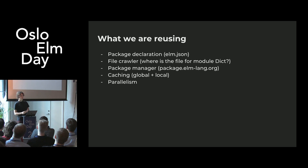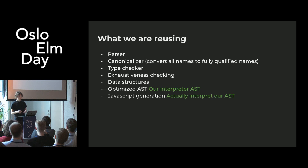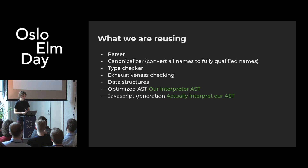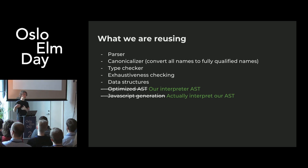Despite all this, we're able to reuse almost all of the compiler. The only thing we have changed to build the interpreter is that the optimized AST has been replaced with our own AST. Instead of taking all of those optimized ASTs and combining them into a JavaScript blob, we are interpreting them — basically simplifying an expression in the context of all of your modules.